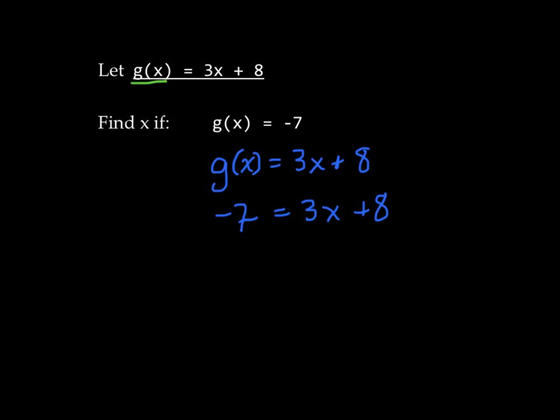Okay, welcome back. g of x is equal to 3x plus 8, and we know that the resulting value is negative 7 from some mystery value of x. So, we can solve from here. I'll subtract 8 from both sides. That gives me negative 15 equals 3x. Divide by 3. It gives me x equals negative 5.